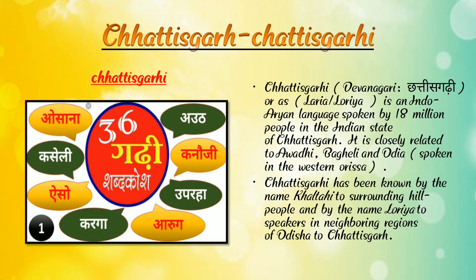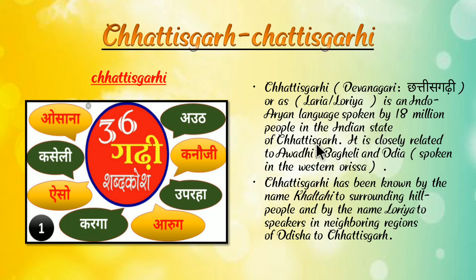Next — Chhattisgarh in Chhattisgarhi. Here we can see some words of the Chhattisgarhi language. Chhattisgarhi is an Indo-Aryan language spoken by 18 million people in the Indian state. Chhattisgarhi is closely related to Awadhi, Bagheli, and Odia. It has been known by the name Khalti to surrounding hill people and by the name Loria to speakers in the neighboring region of Odisha.